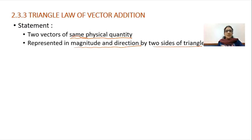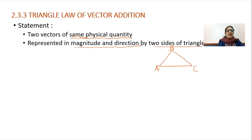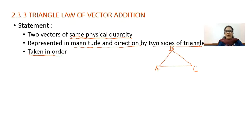For the triangle law, the two vectors are represented in magnitude and direction by two sides of a triangle. If we have a triangle with points A, B, and C, the two sides must be taken in order. Taken in order means: if the first vector is A to B, then the second vector must start at the end point of the first vector — so A, B and then B, C.